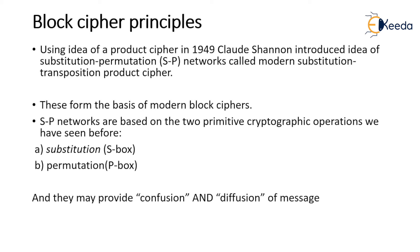The basis of modern block ciphers: the substitution box (S-box) and the permutation box (P-box) are the two primitive cryptographic operations utilized for conversion of plaintext blocks into ciphertext blocks. They are considered the principles of block ciphers, and through them we can provide confusion and diffusion of the message.